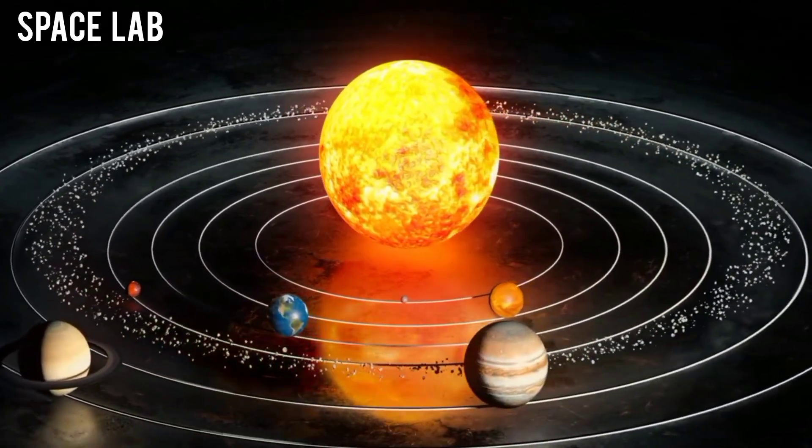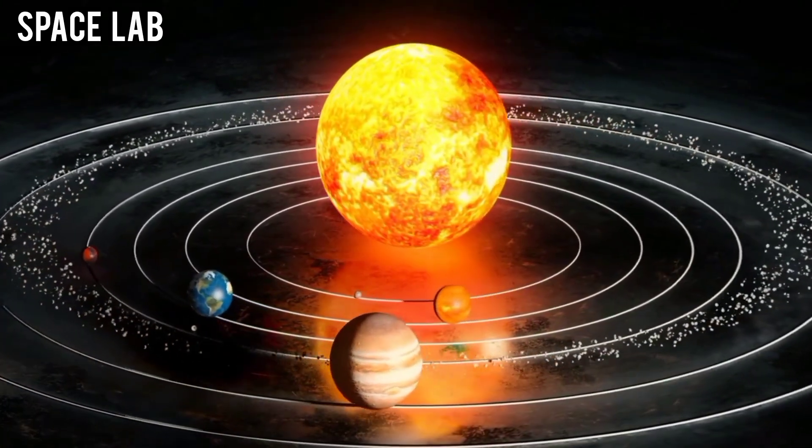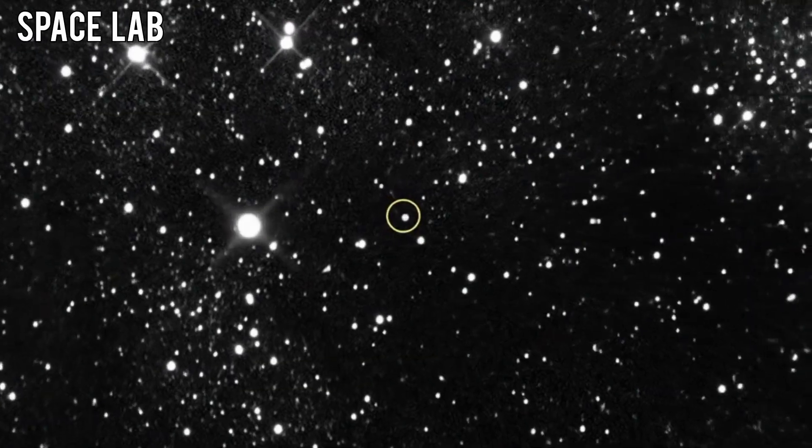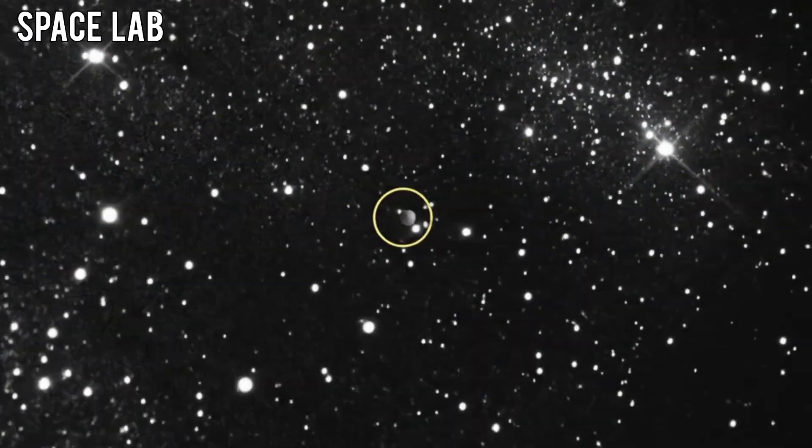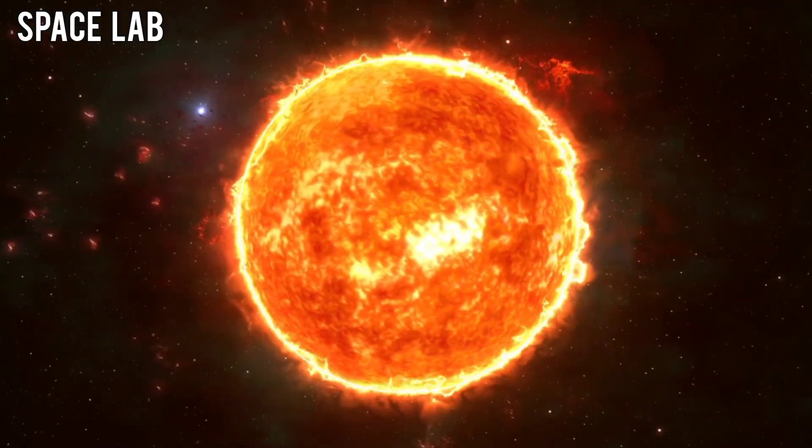If 31a Tadlus wasn't just a natural object, then what, or who, sent it? By the time 31a Tadlus reached the orbit of Mercury, the Sun itself had begun to change.